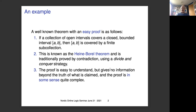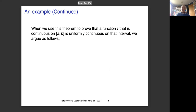You just assume that this is not the case and you divide the interval into smaller and smaller parts where this is still not the case, until you reach a single point where it obviously must be true. So the proof is easy to understand. And in some sense the proof is quite complex because to make this construction work, you have to quantify over the continuum in a rather non-trivial way.